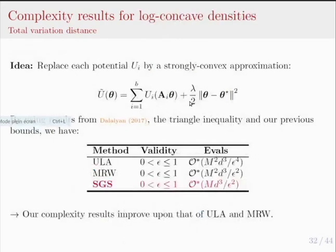We have similar guarantees for total variation distance, with better dependencies with respect to dimension, condition number kappa, and prescribed precision compared to ULA, and generally better dependencies with respect to dimension and epsilon. For log-concave distributions — by adding a Gaussian term to convex but not strongly convex potentials — we can show complexity results for log-concave distributions, where comparing with ULA and the Metropolis random walk we have better dependencies with respect to both precision epsilon and the Lipschitz constant M, giving overall better complexity results than these two state-of-the-art approaches.